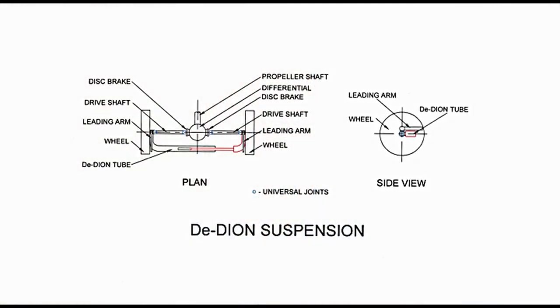The tube with the sliding joint became known as the De Dion tube. The differential and two half shafts act independently. Wheels on opposite sides of the axle are joined by the De Dion tube. Referring to the diagram presenting De Dion suspension, it has two views — plan on the left and side view on the right. The side view shows the relative positions of the leading arm and De Dion tube. The plan presents the differential, two half shafts, propeller shafts, and other details including the De Dion tube.